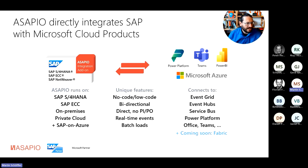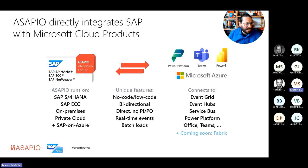What we're currently working on together with Microsoft is a connection more directly to the new Microsoft Fabric suite of tools, where the approach we are taking is having a more direct connect between SAP and the data lake, so that the data lake — as a basis for most Fabric services — is filled directly and doesn't have to be filled through the event broker services.